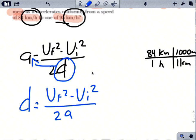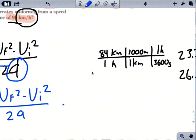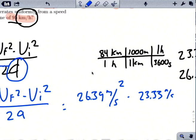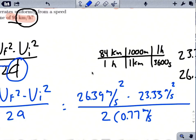We go ahead and we take what we have and we plug it in. So we should get our final velocity, which is 26.39 meters per second, and we're going to square that whole thing, minus 23.33 meters per second, which is our initial velocity, all over 2 times our acceleration of 0.77 meters per second squared.